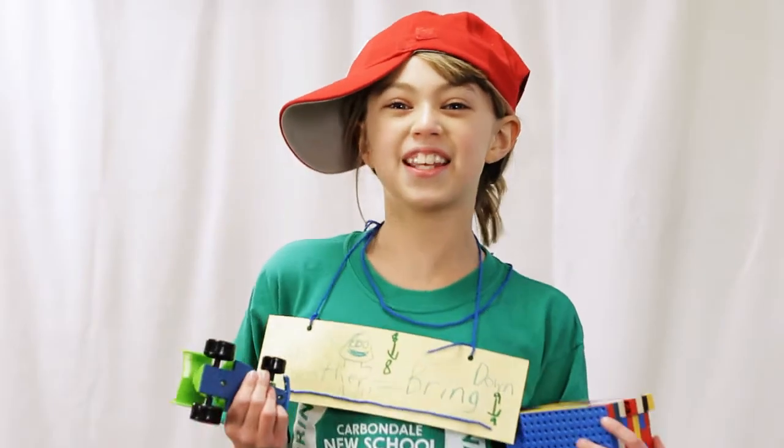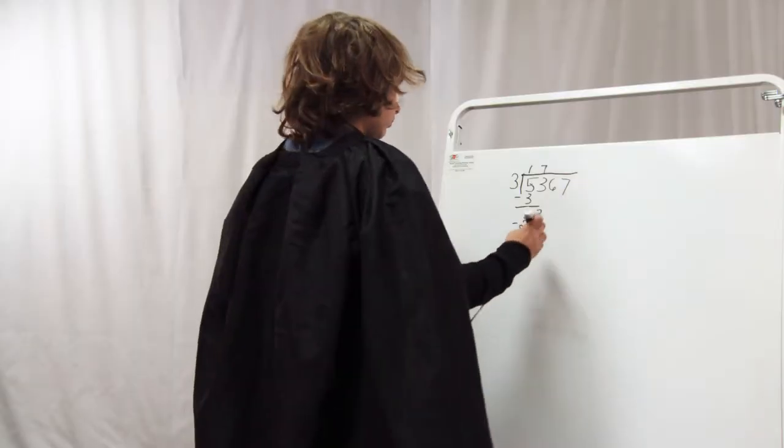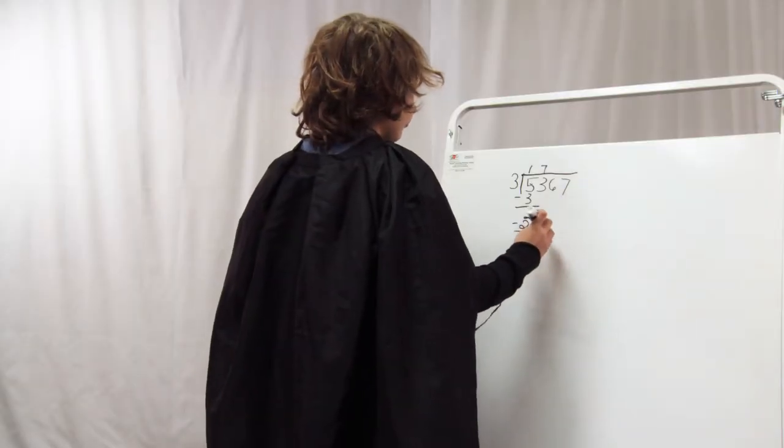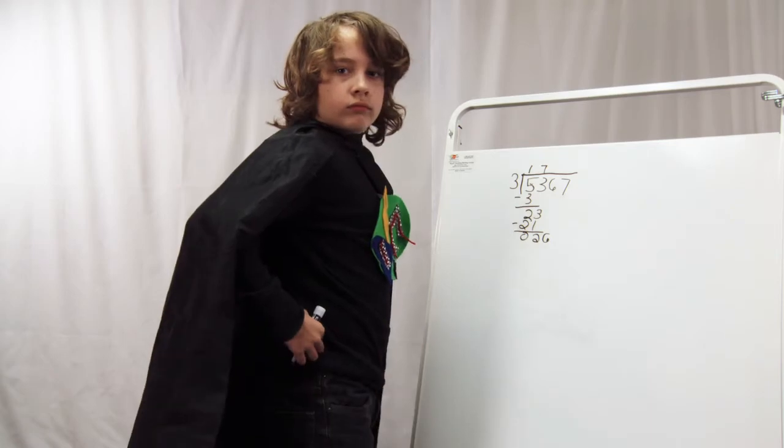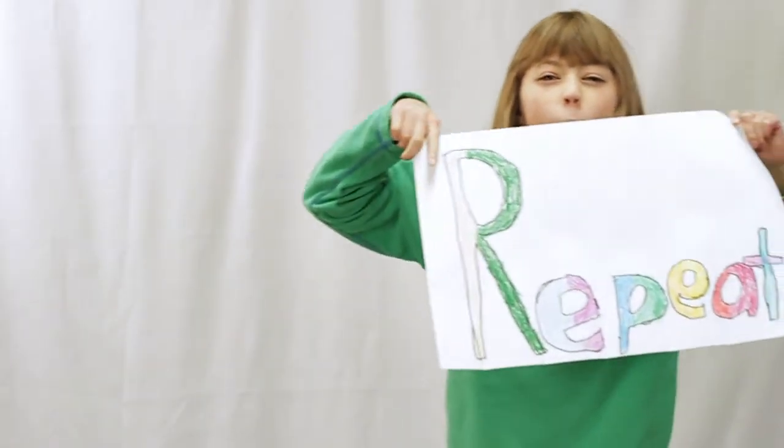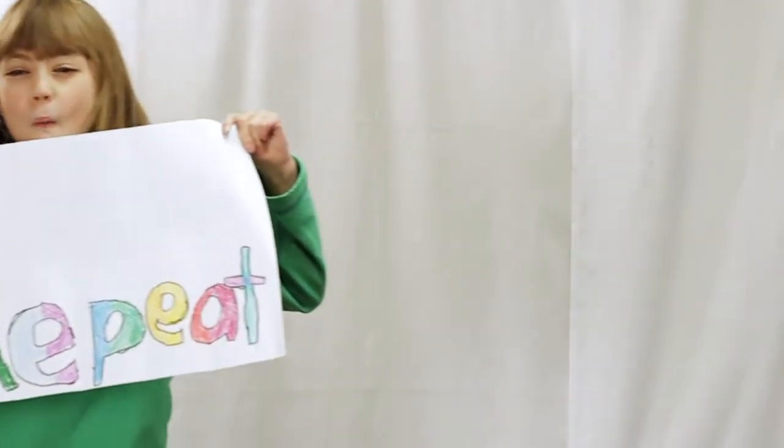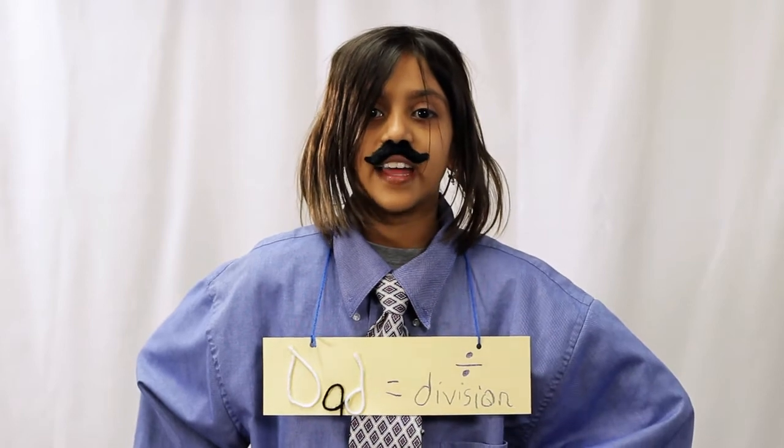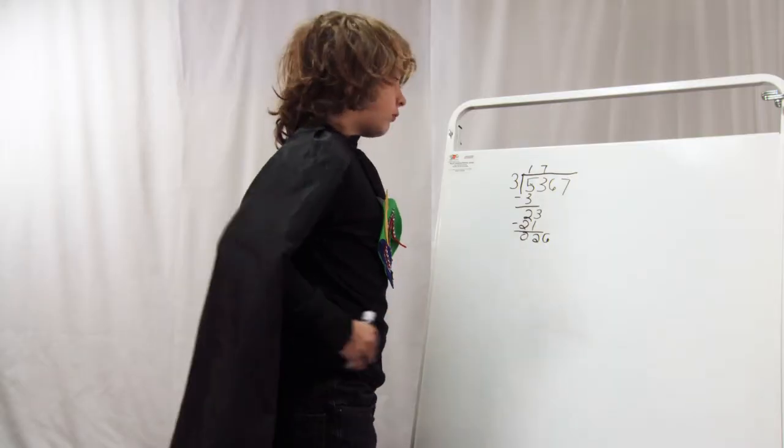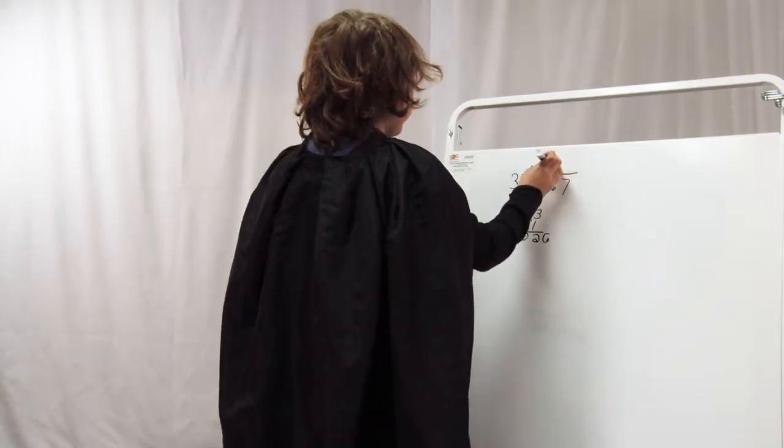We bring down the six! Bring down the six. Repeat! First we divide! Twenty-six divided by three is eight.